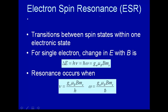So far in our study of spectroscopy we've looked at transitions between rotational energy levels, vibrational energy levels, and also electronic energy levels. There are two other kinds of spectroscopy we're going to talk about, and these deal with transitions between spin states.